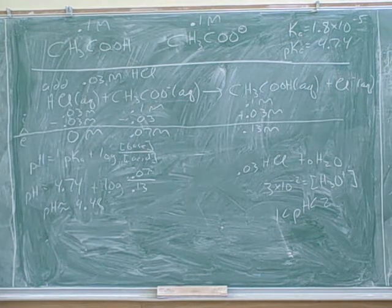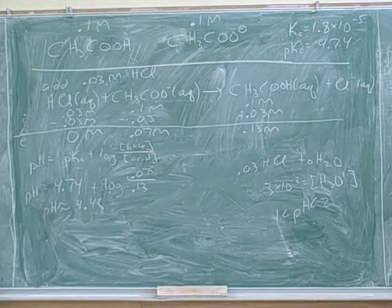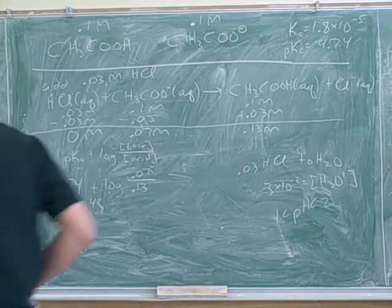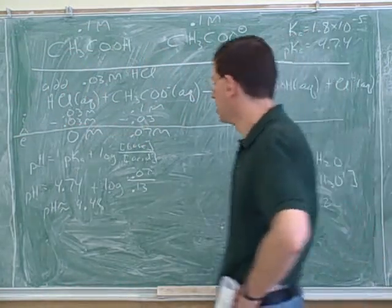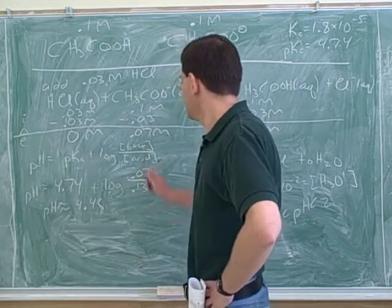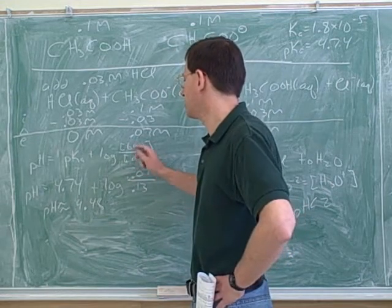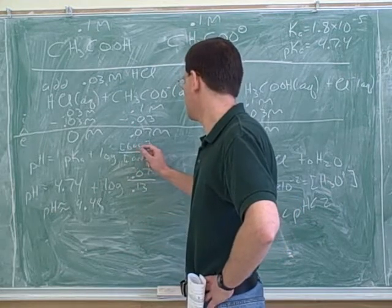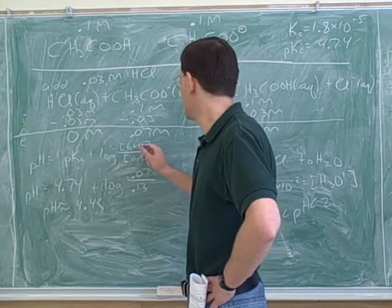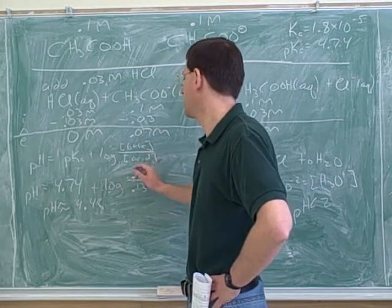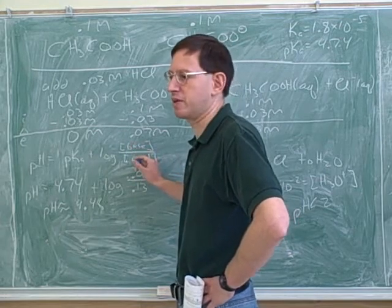Does it matter how much HCl we put in? Right now we're focusing on the concentration, but we didn't specify how much of it we put in. What matters is the concentration. To tell the truth, you can actually use the Henderson-Hasselbalch equation either in terms of concentrations or in terms of moles, because concentration is just the number of moles divided by the volume, and both the base and acid have the same volume. So it doesn't matter whether you divide both by the volume or not — as long as you're consistent, you can plug in moles of base and acid, or concentrations of base and acid.